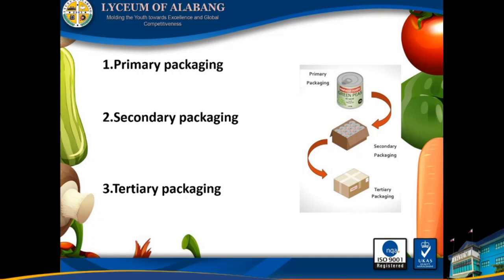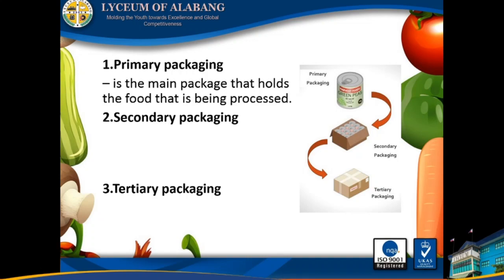So what is primary packaging? It is the main package that holds the food that is being processed. When you say primary packaging, it is the term used to designate the layer of packaging in immediate contact with the product. In other words, it is the first packaging layer in which the product is contained. Primary packaging is constructed both with the product itself and any existing secondary layers of packaging in mind.